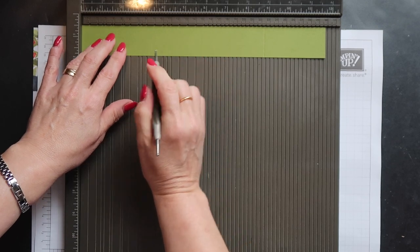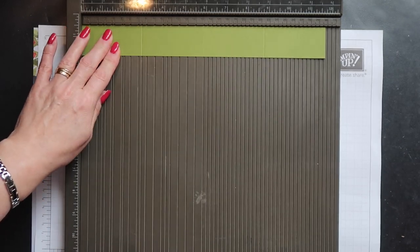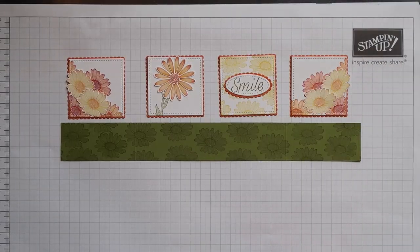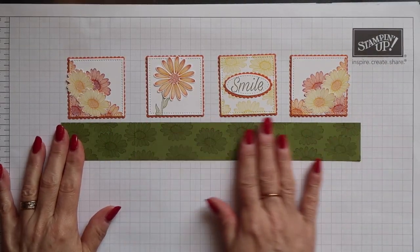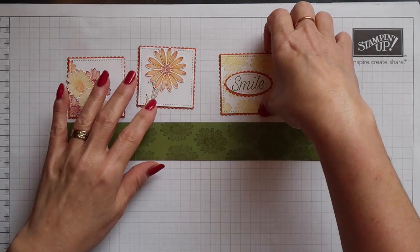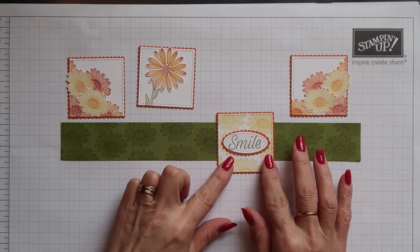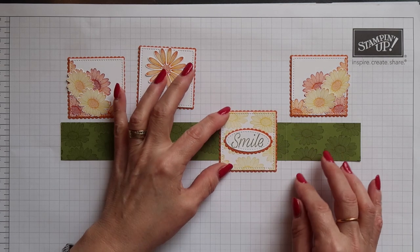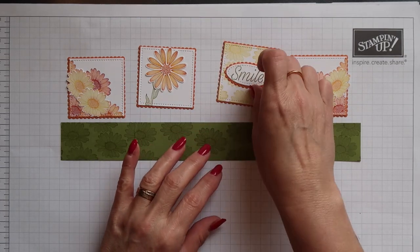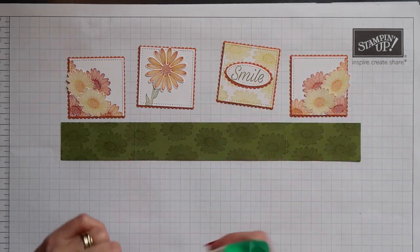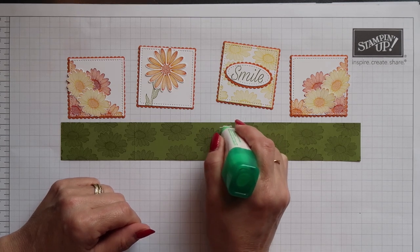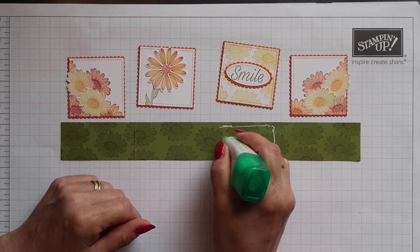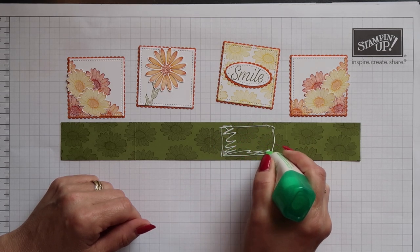This strip has already been stamped using the Small Daisy and Old Olive ink all over the right side. All the small panels can now be added onto this strip. You've got four sections and you position each one in the middle of the section. I'm just using my grid paper to help me centre each one. When I add the glue, I'm keeping the glue away from the edge, which is not what I normally do. This is just to ensure that it doesn't ooze out onto the back of the panel.